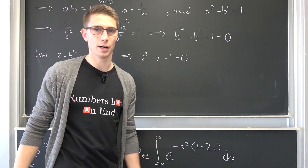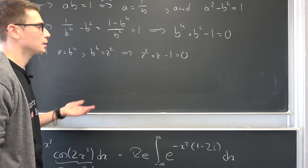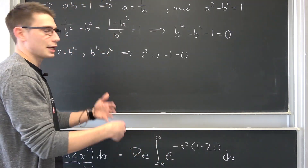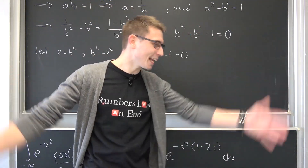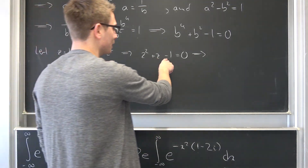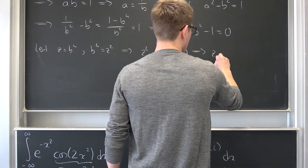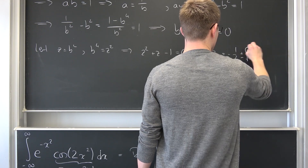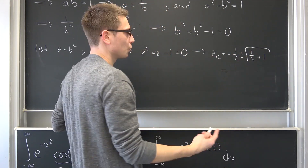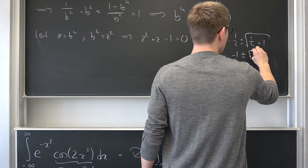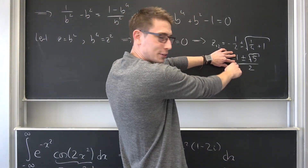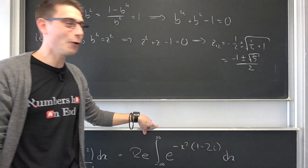Now we have a fourth degree polynomial, but with zero coefficients wherever we have an odd exponent. This means we can use a substitution: let z equal b squared, so b to the fourth is z squared. Our polynomial becomes z squared plus z minus 1 equals 0. This is third grade algebra — we now have a quadratic we can solve with the quadratic formula. PQ-Formel, ABC-Formel, Mitternachtsformel — I don't care. I'm a German boy, I'll use the PQ-Formel, where p equals 1 and q equals negative 1, giving us z equals negative one half plus or minus the square root of 5 over 4, which simplifies to negative 1 plus or minus the square root of 5, all over 2.